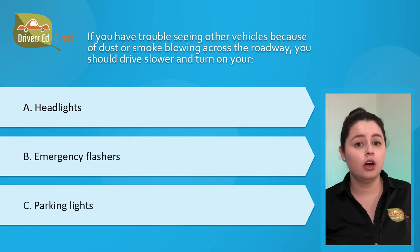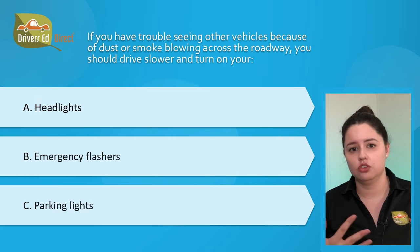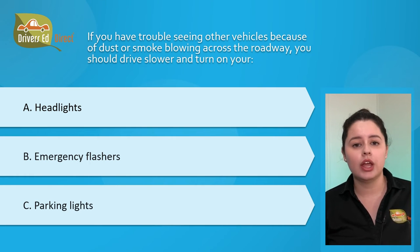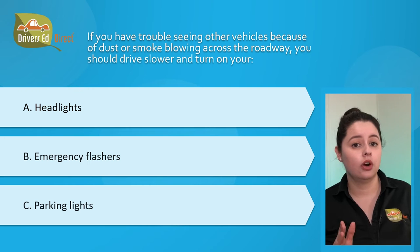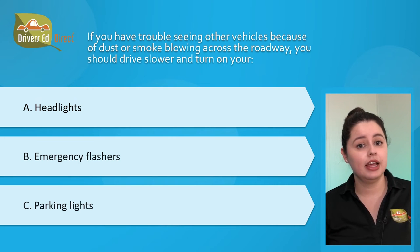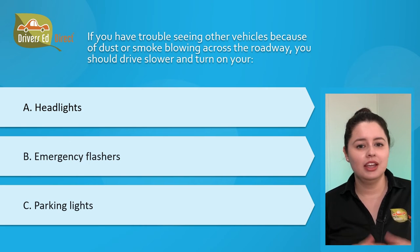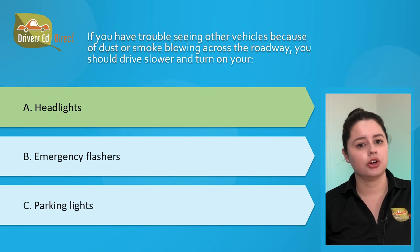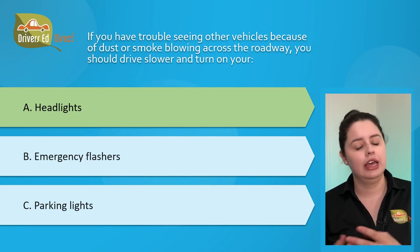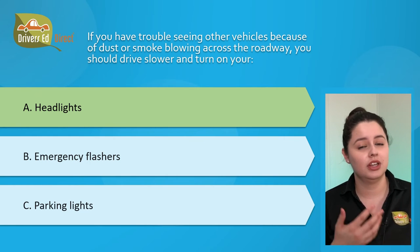Question number twelve: if you have trouble seeing other vehicles because of dust or smoke blowing across the roadway, you should drive slower and turn on your: A) headlights, B) emergency flashers, or C) parking lights. The correct answer is A, headlights. Reduce your speed and turn on your headlights anytime it's raining, foggy, snowing, smoky, or dusty.